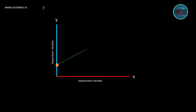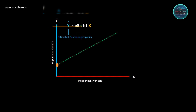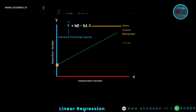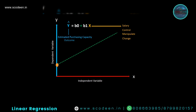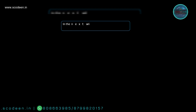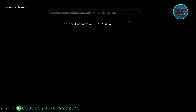Let's analyze the regression equation: y = b0 + b1x. Here, y is the estimated dependent variable and x is the independent variable. The independent variable x means we can control it, manipulate it, and modify or change it. In the next video, I will show you how to calculate linear regression using the least squares method.